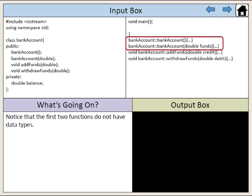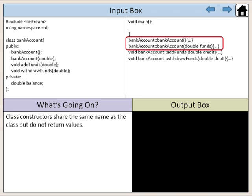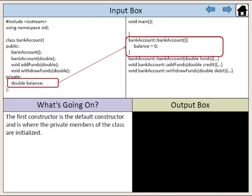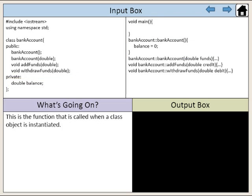Notice that the first two functions do not have data types. These are called class constructors. Class constructors share the same name as the class but do not return values. The first constructor is the default constructor and is where the private members of the class are initialized. This is the function that is called when a class object is instantiated.